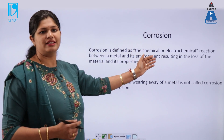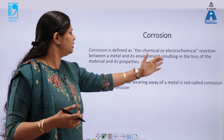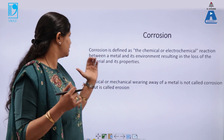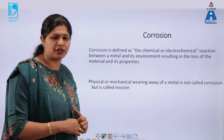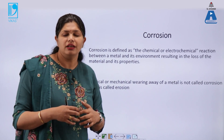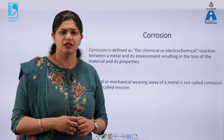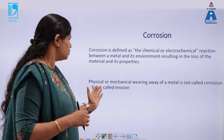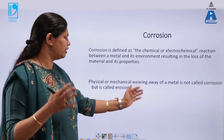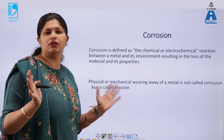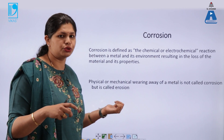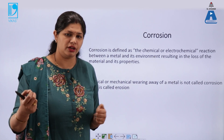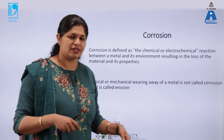Corrosion is defined as the chemical or electrochemical reaction between metal and the environment resulting in the loss of material and its properties. When the material reacts with water or moisture present in the atmosphere, it depletes. Physical or mechanical wearing away of metal is not corrosion — that is called erosion. Only a chemical reaction with certain gases or water results in corrosion.